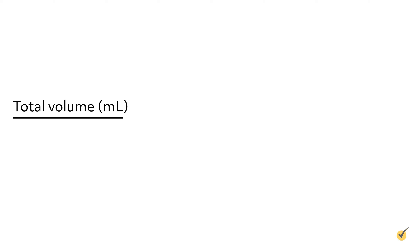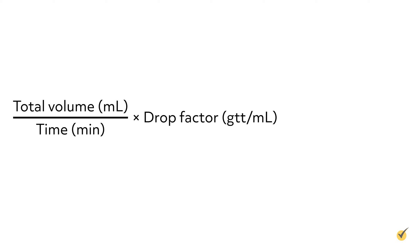To calculate the drip rate, however, the drop factor is needed. The formula for calculating the IV drip rate is: total volume in milliliters divided by time in minutes, multiplied by the drop factor in drops per milliliter, which equals the IV drip rate in drops per minute.